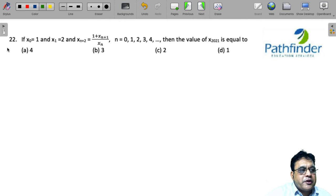Cat 2021 Slot 1, Question Number 22. You have x₀ equals 1, x₁ equals 2, and then your function is defined as xₙ₊₂ = 1 + xₙ₊₁/xₙ for n starting from 0, 1, 2, 3, 4, and so on. You have to calculate the value of x₂₀₂₁.